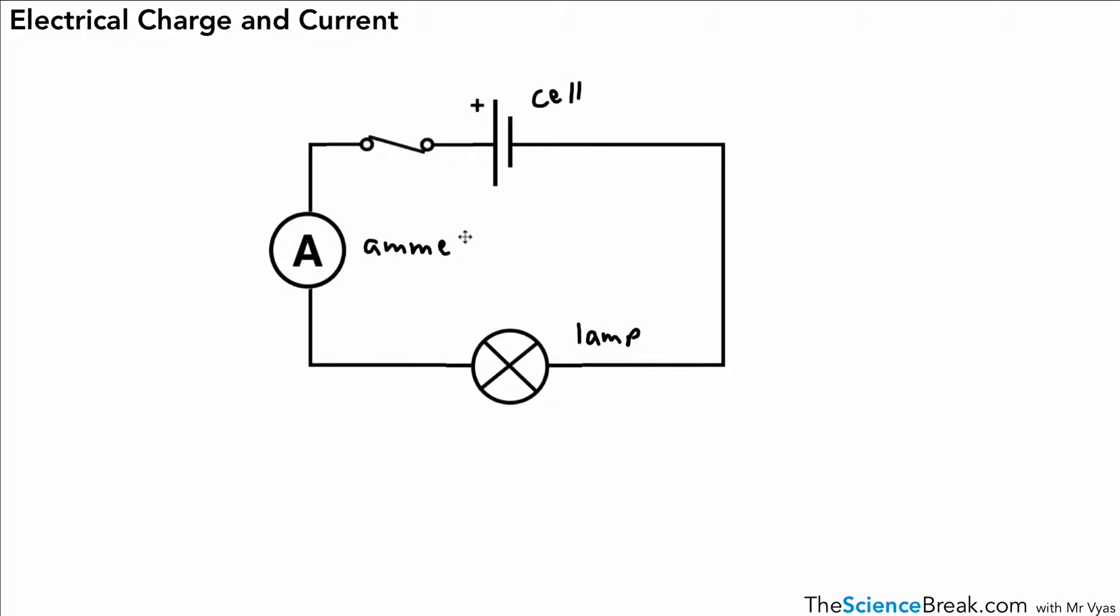So there we've got a cell, a lamp, and an ammeter. An ammeter measures current, and we'll look at a bit more detail of that in a moment. But here's our lamp happily shining away based on this little circuit here.